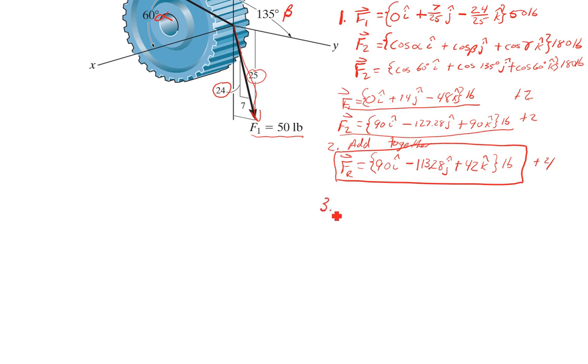Step 3, I'm going to find the magnitude of FR. You'll recall that the magnitude of a vector is the magnitude in the X direction squared plus the magnitude in the Y direction squared plus the magnitude in the Z direction squared, take the square root of the whole thing. It's like the Pythagorean theorem in three dimensions. So FR is going to be 90 squared plus negative 113.28 squared plus 42 squared. The square root of that thing turns out to be 150.67 pounds.